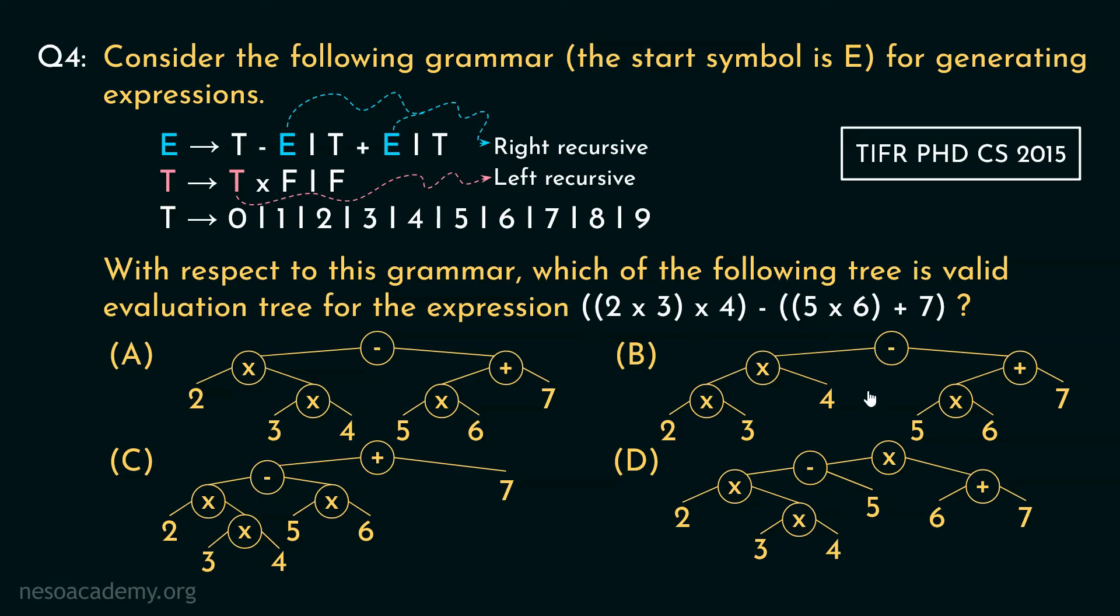Observe. Just like the expression in option B, 2 and 3 are multiplied first then the result is multiplied with 4. Simultaneously at first 5 and 6 are multiplied and then the result is added to 7. Just like this one. Finally the subtraction takes place. So option B is the correct choice.